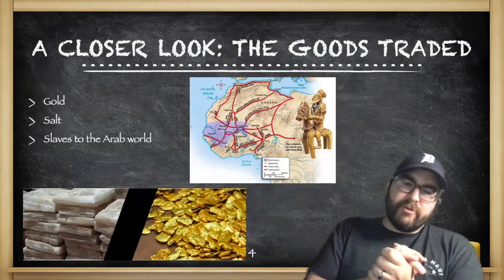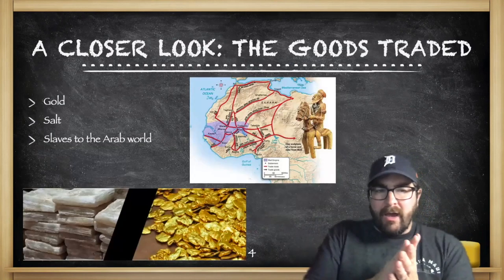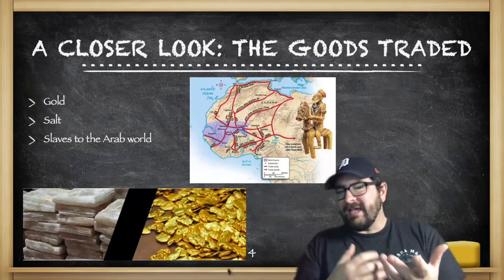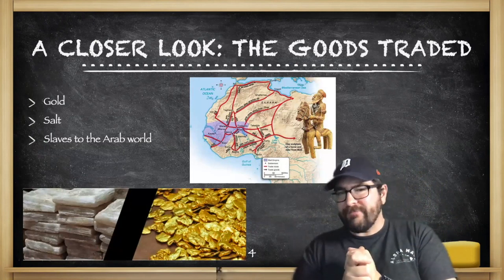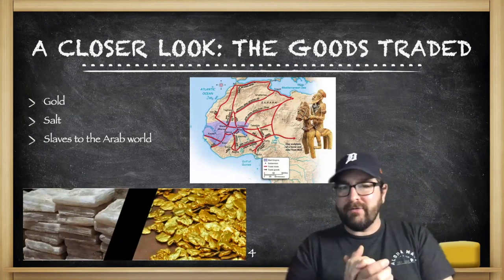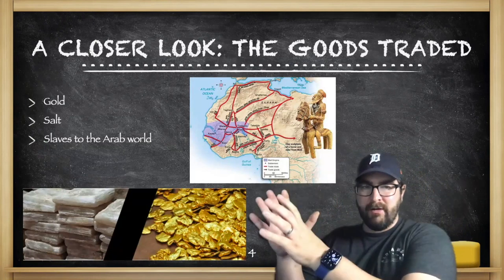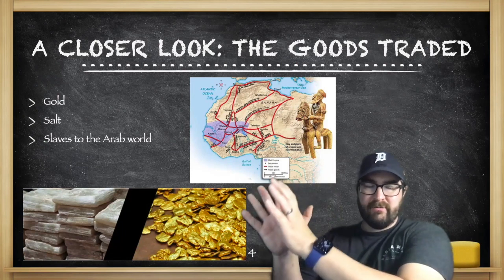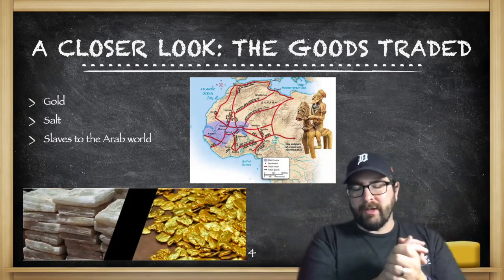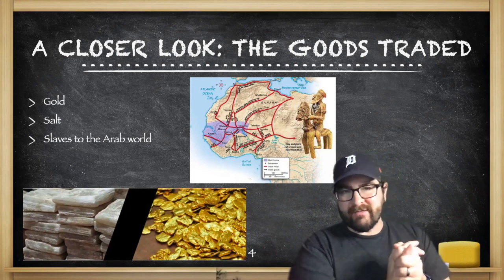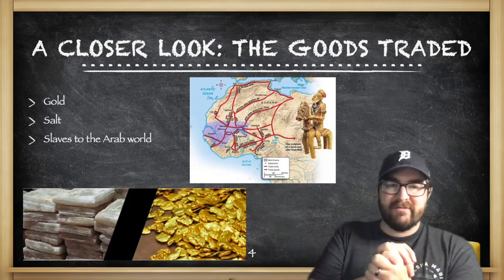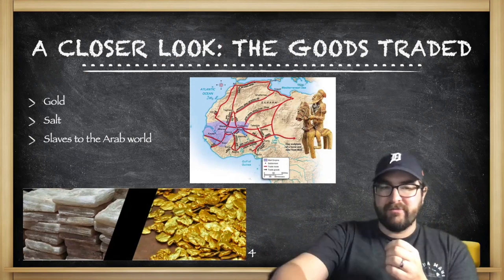The goods traded along the Trans-Saharan Trade Network are gold and salt, and then slaves going primarily to North Africa and to the Arab world. We're going to talk about that again in a later unit when we compare the slavery going to the Arab world to the slavery ultimately going over to the Americas and some of the different natures of that coerced labor system.